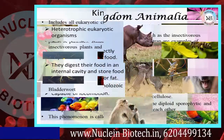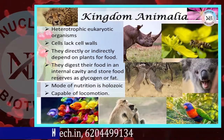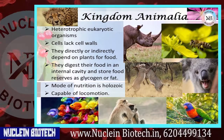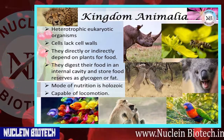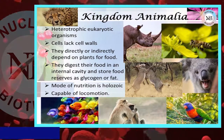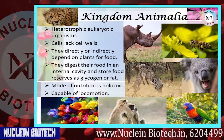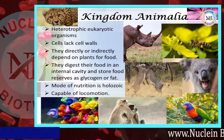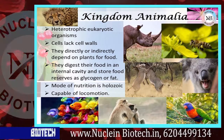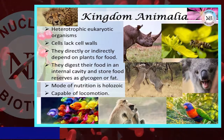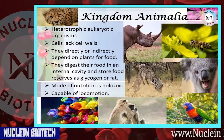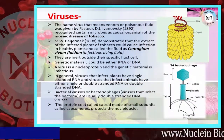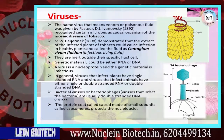Kingdom Animalia: heterotrophic eukaryotic organisms without a cell wall. They directly or indirectly depend on plants for their food. They digest food in an internal cavity and store food reserves as glycogen or fat. Mode of nutrition is holozoic and they are capable of locomotion.